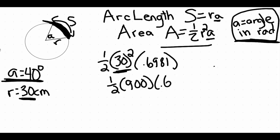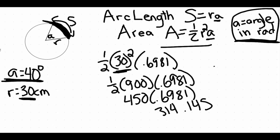Drop everything else down. And then this is pretty much just multiplication here. So one half times 900, well, half of 900 is 450. And then we're going to take that 450 and multiply it times that 0.6981. And I am getting 314.145.